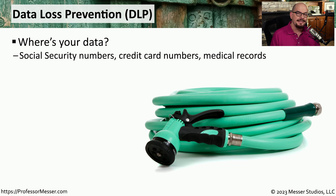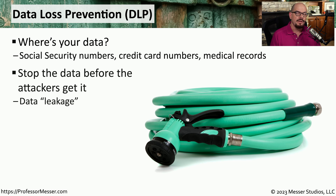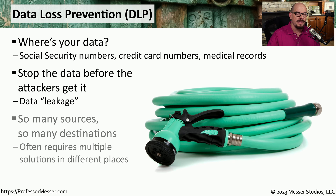Another good monitoring tool is Data Loss Prevention, or DLP. These are systems that can look for sensitive data being sent across the network and block that traffic in real-time. So if someone is transmitting social security numbers, medical information, or anything else that might be considered sensitive, we can block that using a DLP solution. One of the useful features of a DLP is blocking this traffic in real-time, so it is constantly monitoring traffic either sent across the network or information that might be stored on a local machine. There are DLP solutions available that are network-connected and can watch the packets going by.